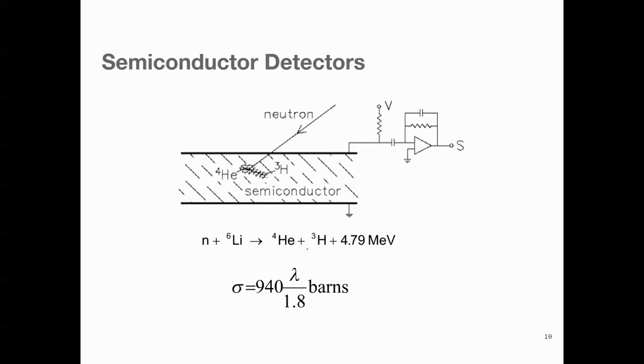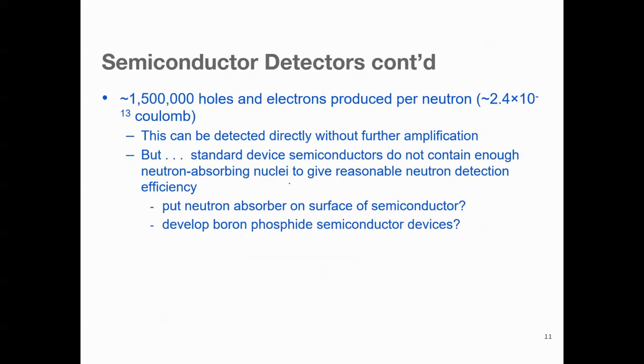The next class of detectors, we have semiconductor detectors. In semiconductor detectors, we have a p-n junction diode which is in reverse bias and the depletion region mainly acts as the neutron detection material. The same reaction we exploit here. We use lithium-based semiconductors which have six lithium nuclei. In this reaction, we again have gamma radiation being produced and the gamma radiation produces the charges in the material which sends the electric signal. The typical nuclear cross-section for this reaction is 940 lambda by 1.8 barns, and in this detection system we have typically 1.5 million holes and electrons that are produced per neutron. This is equivalent to a charge of 2.4 into 10 to the power minus 13 coulombs. This can be detected directly without further amplification.